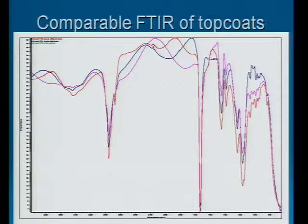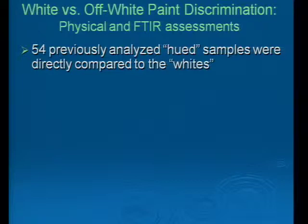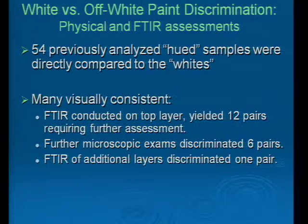We still felt we needed to go back and assess any samples within what we called the off-white group that might need to be compared to the whites — some that were very, very light in color. There were 54 samples identified from what we'd originally termed as hued that we thought needed to go back and be assessed against the whites. Many of those samples were visually consistent with the whites, so FTIR analysis was performed on the top coats. Based on that assessment, 12 pairs required further analysis.